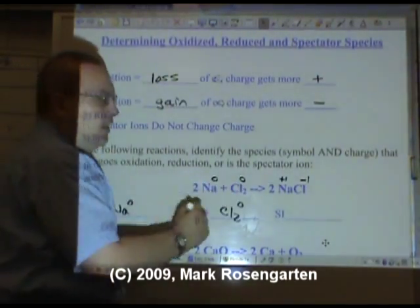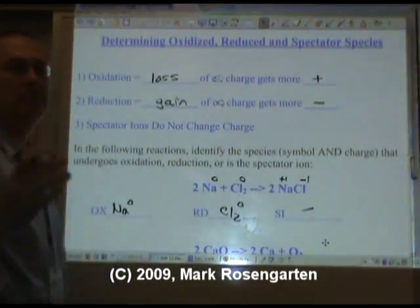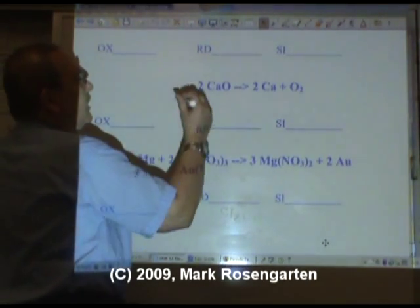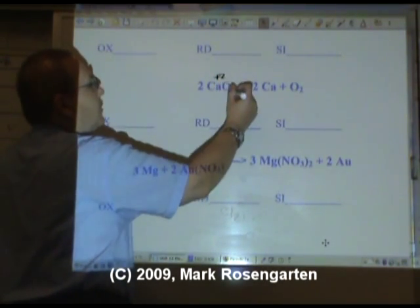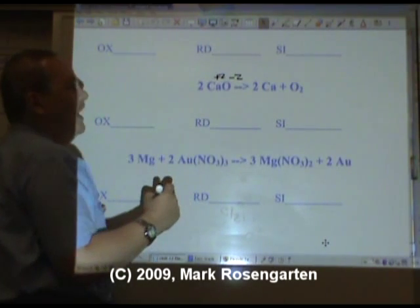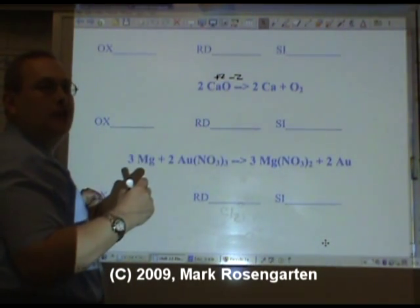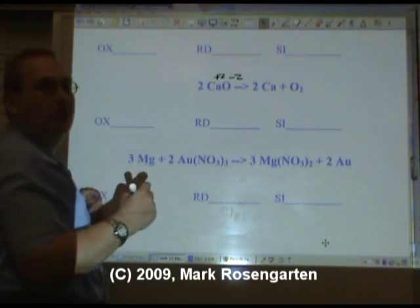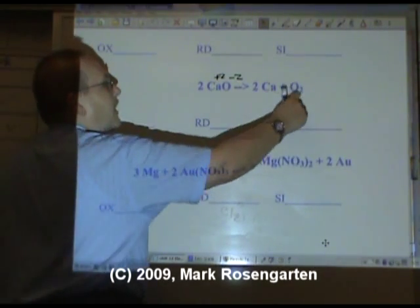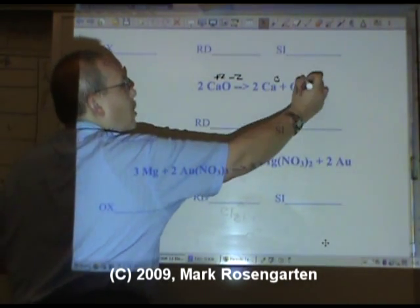Now, there is no third species here, so there's no spectator ion. In this reaction, calcium starts off as plus two, oxide starts off as minus two. You can verify these charges simply by going to the periodic table. These are by themselves, they have no charge.